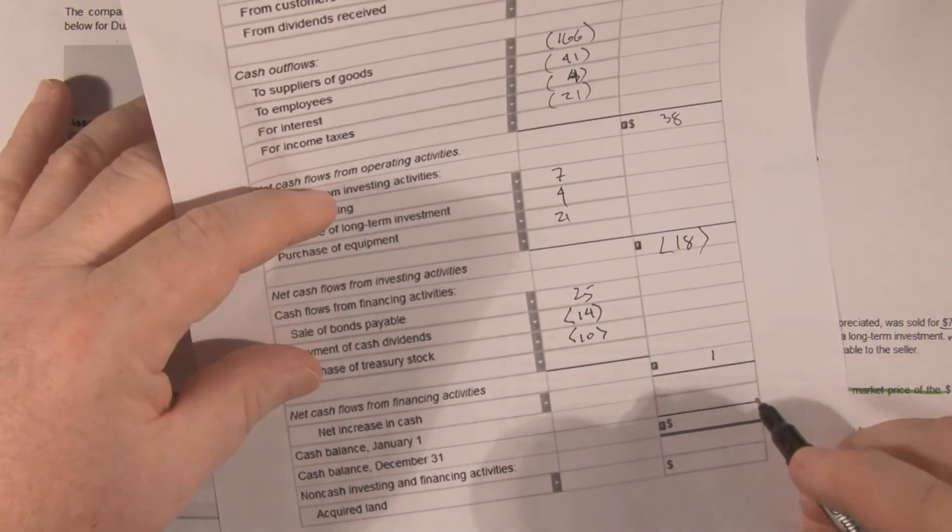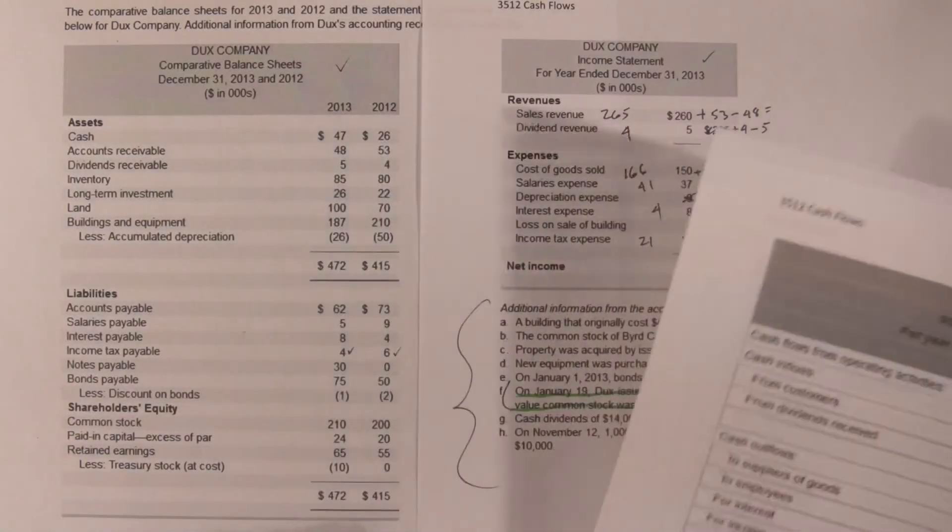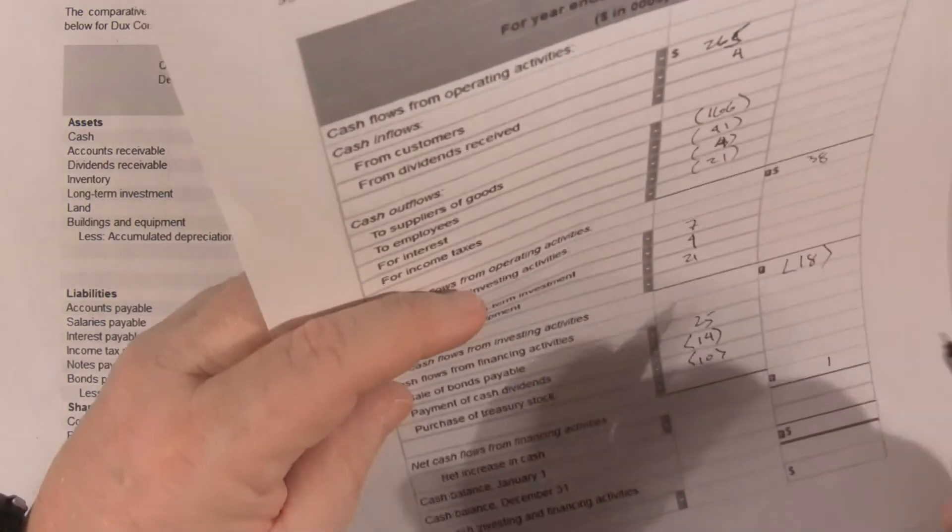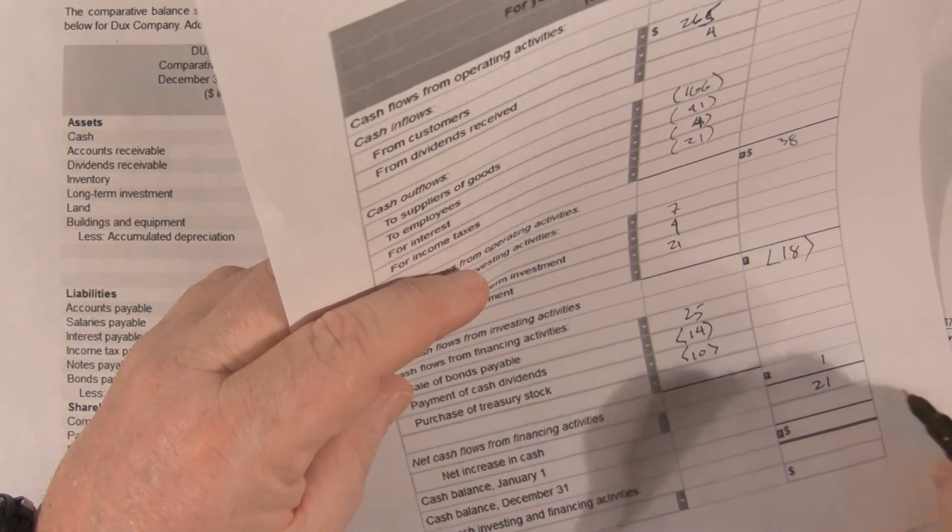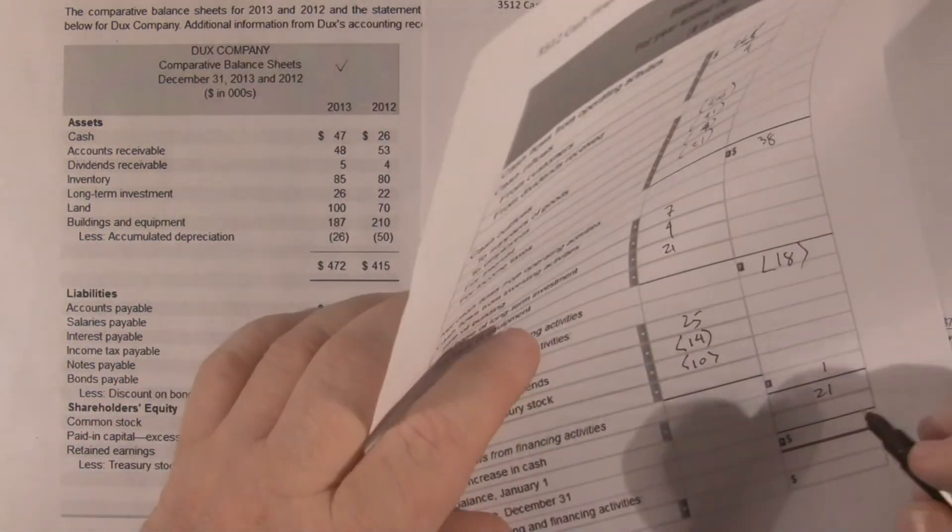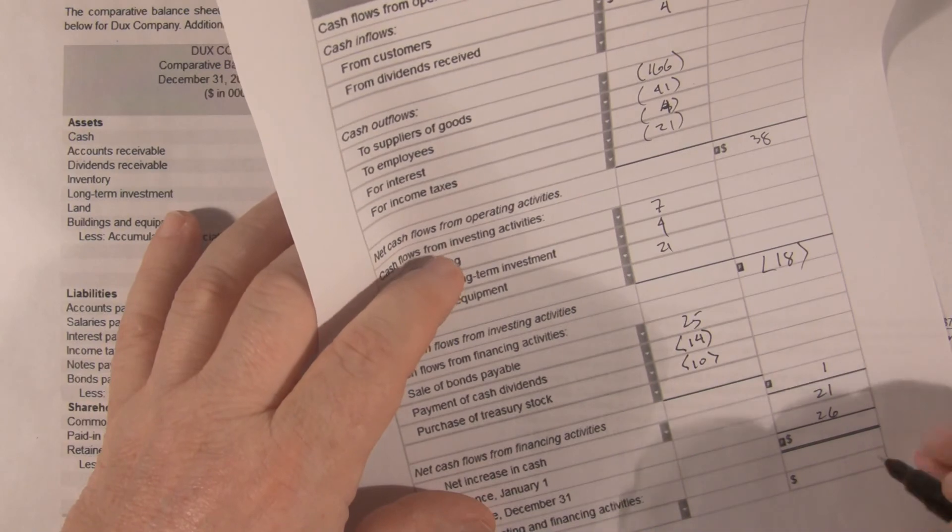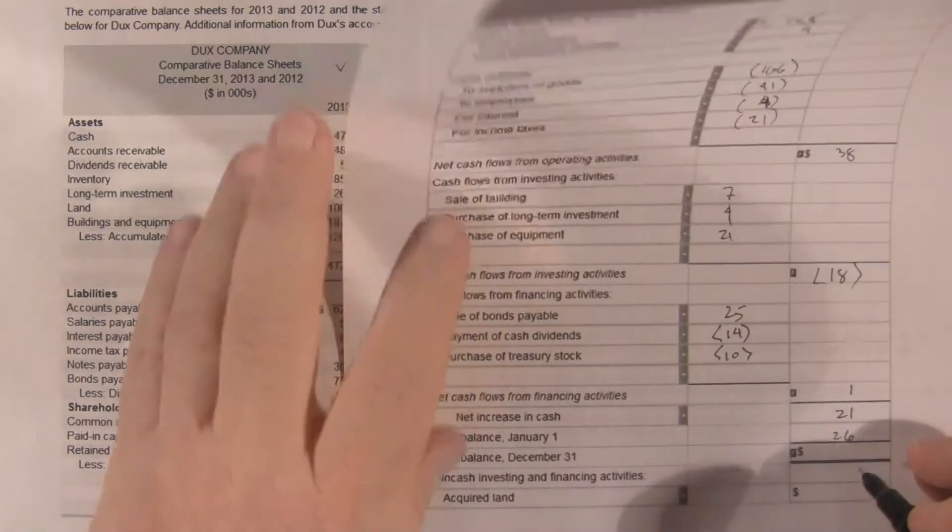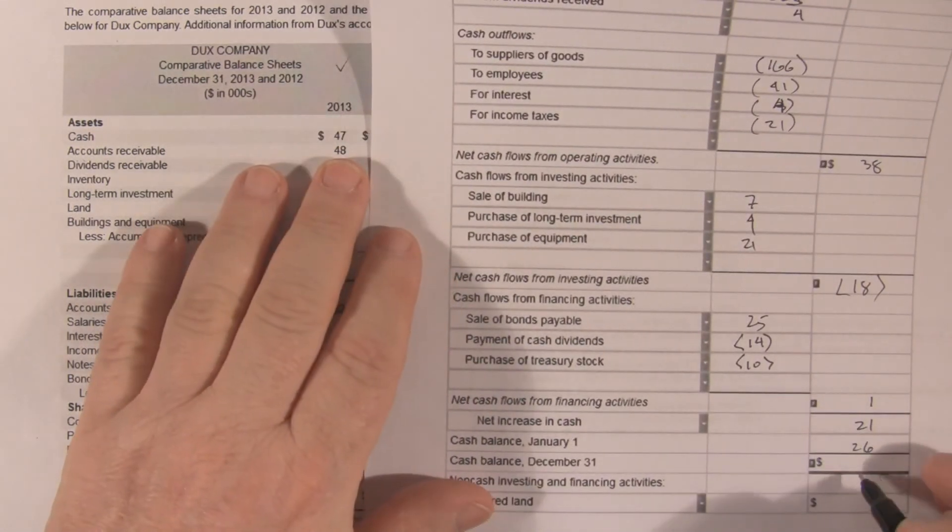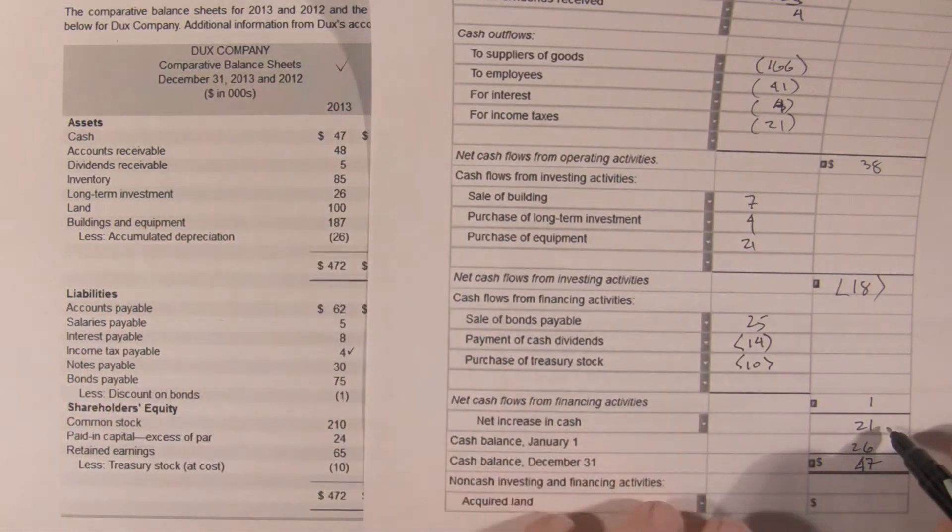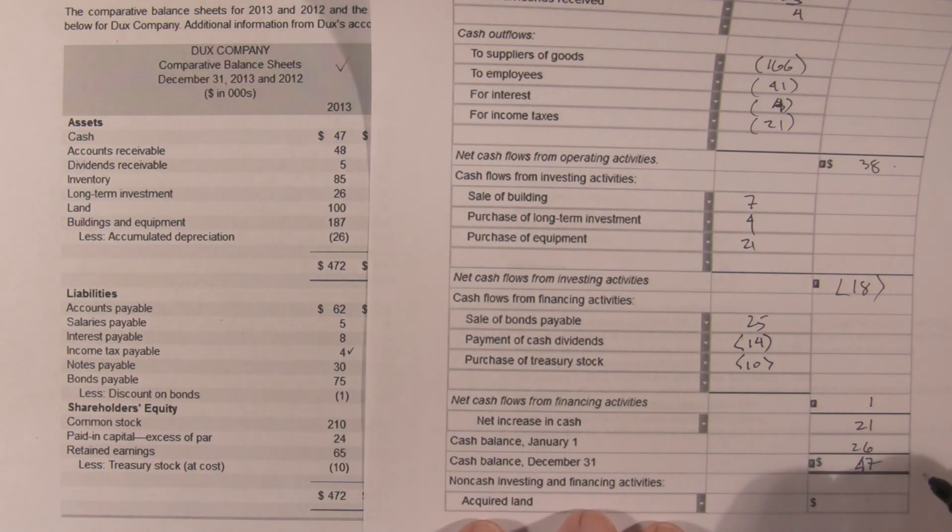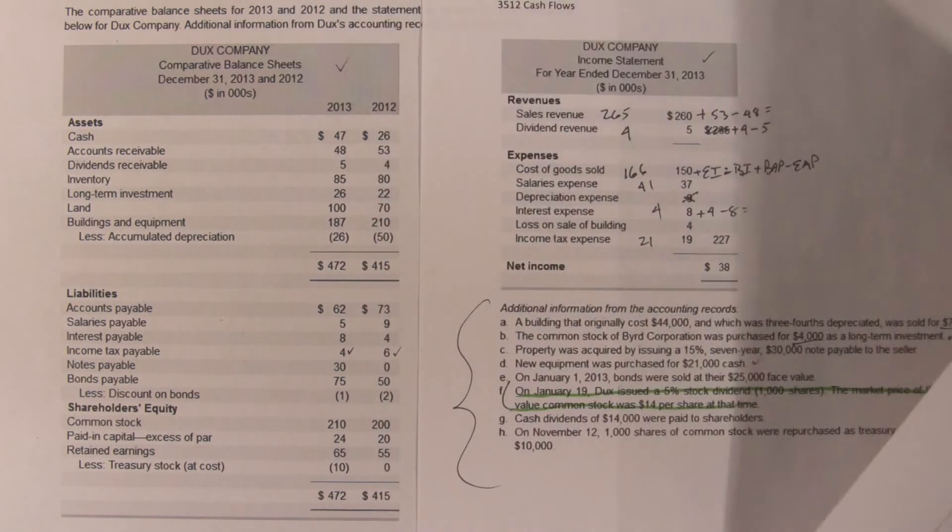So let's take a look at our increase in cash. We know that from the beginning to the end, our cash went up by 21. So our cash balance at the beginning was 26. Our cash balance at the end is 47. And this 21 is this. It's 38 minus 18 is 20 plus 1, 21.